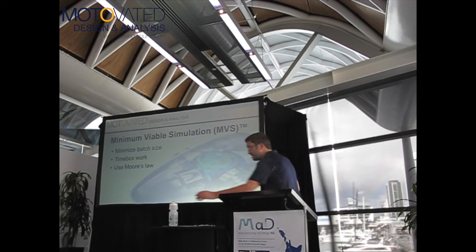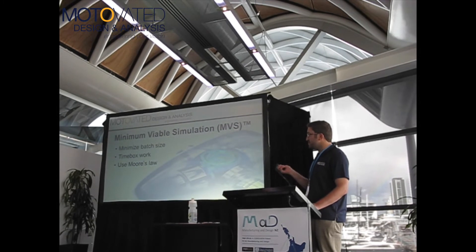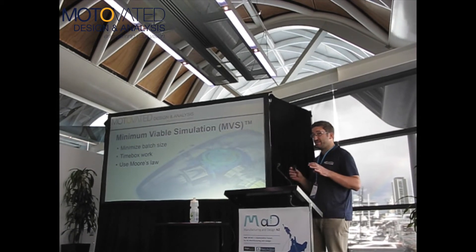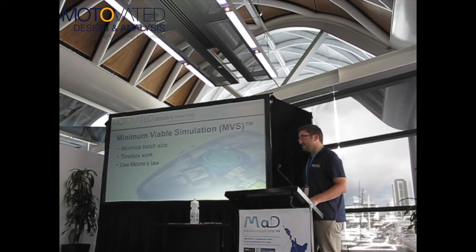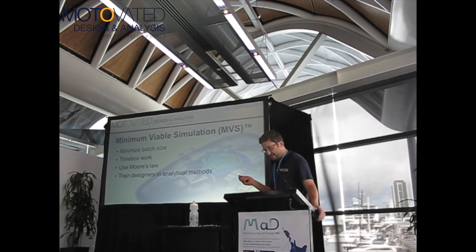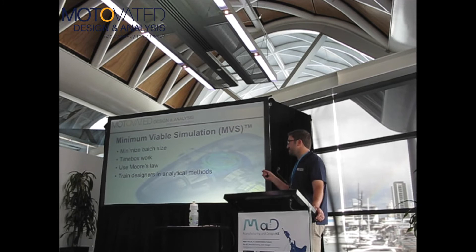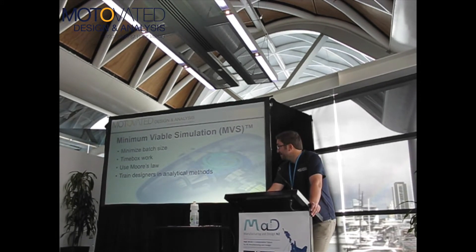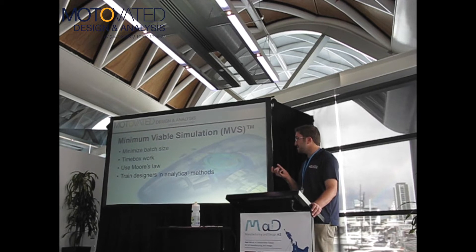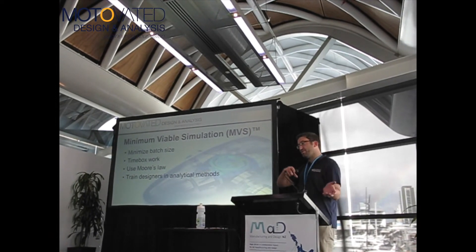Moore's Law — Peter mentioned this as well — computers have come a long way, but we still see a lot of analysts who will spend half a day simplifying a model to save 30 seconds of run time. There are cases when you have to simplify models for accuracy, but often the return on investment's not there. Train designers in analytical methods: as an analyst, I know how difficult it is to get quality, test-comparable results from finite element analysis. It takes a lot of training, but it's actually quite easy to teach people to do comparative analysis and optimization if they've got basic mechanics and materials science. It cuts down the whole throwing-things-over-the-wall problem.